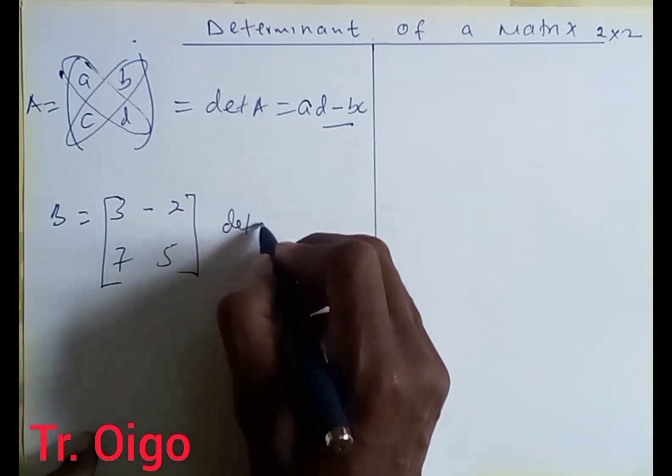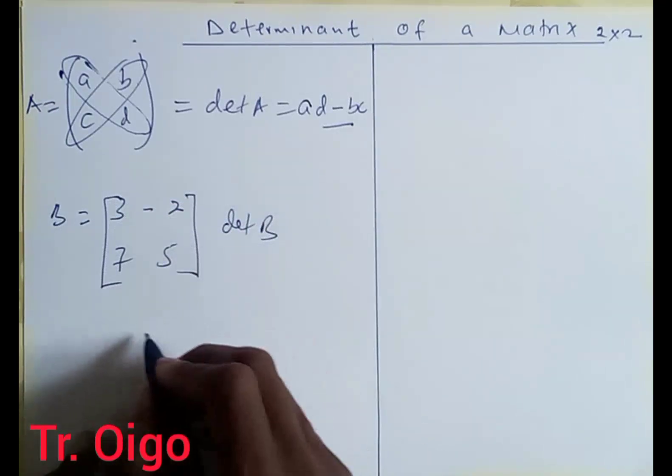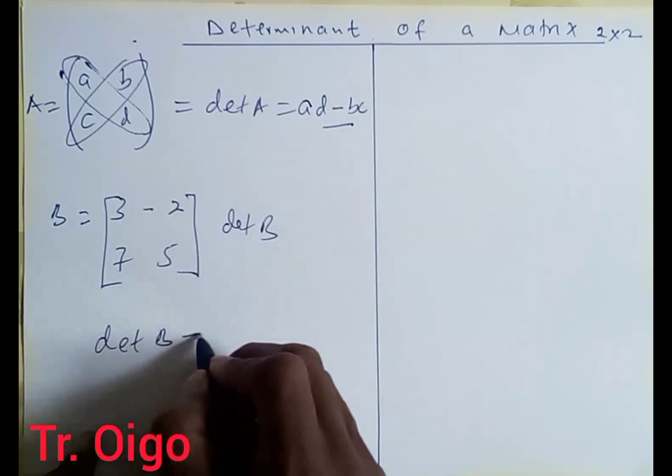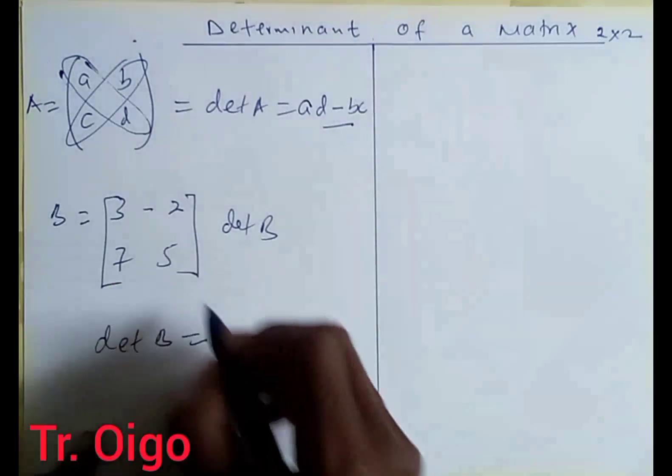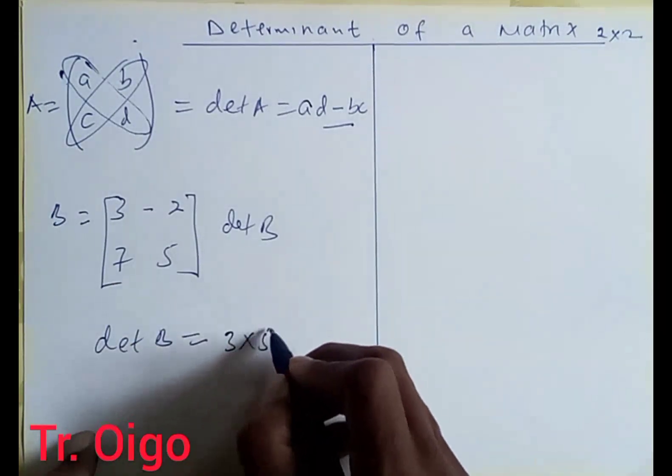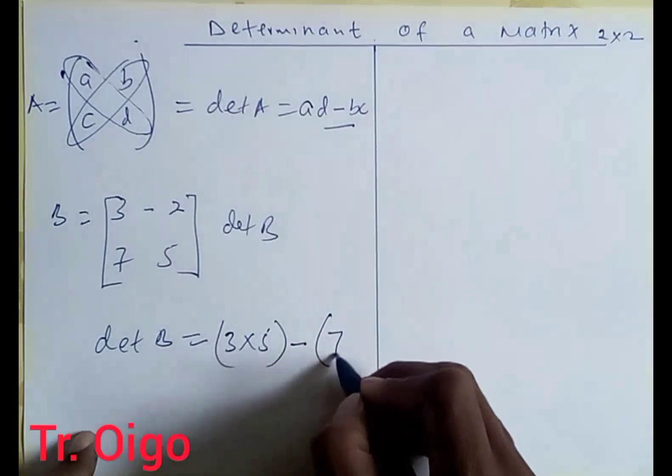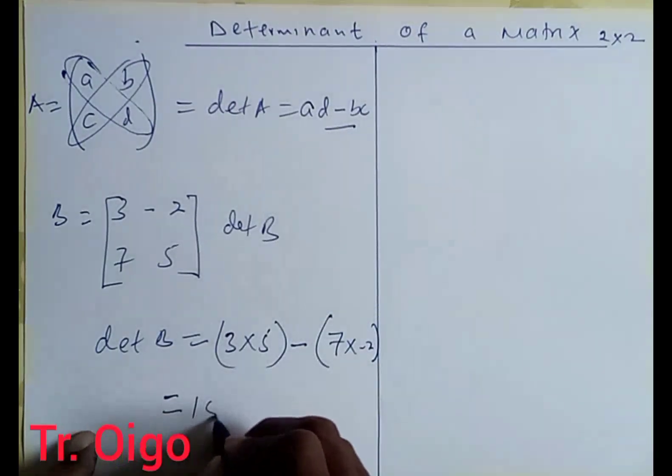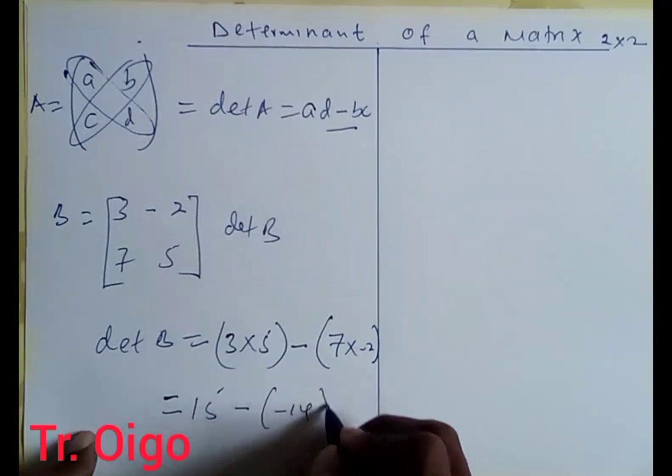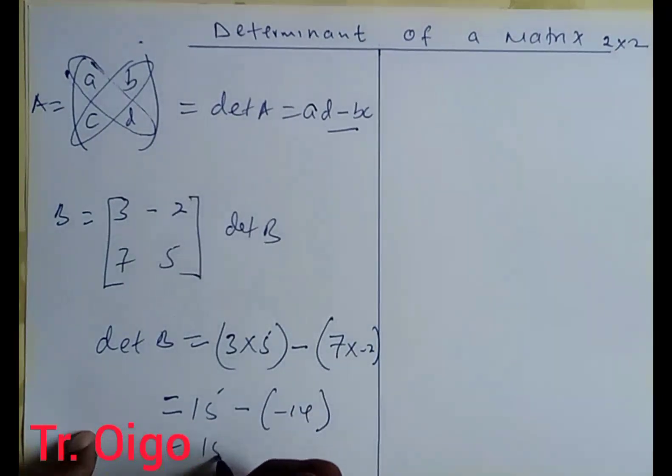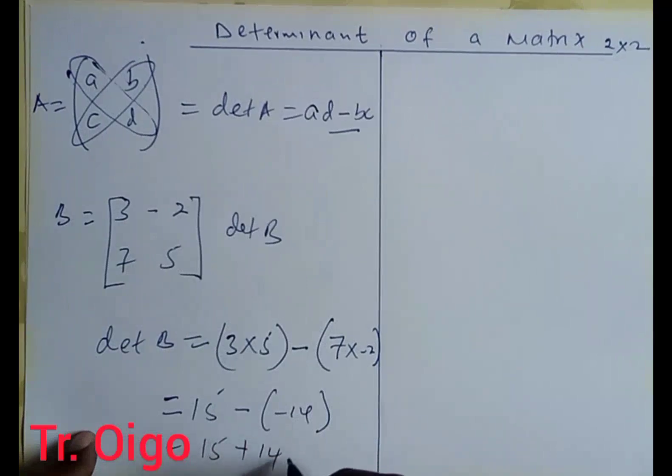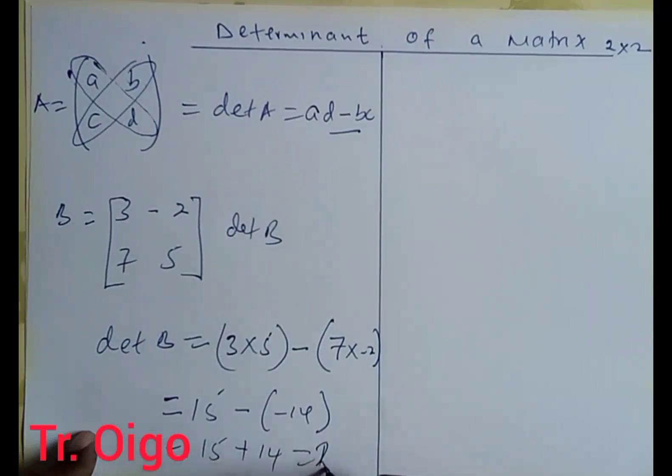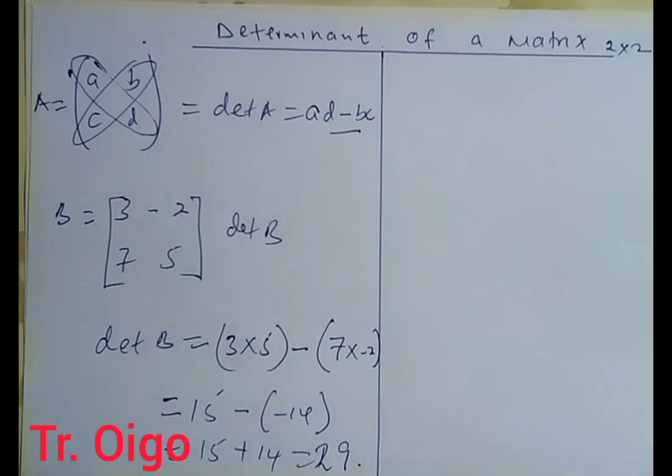To get the determinant of B, I'm going to say that det B equals 3 multiplied by 5 minus 7 multiplied by negative 2. This is going to be 15 minus negative 14, and by so doing this is 15 plus 14, which gives you 29. Therefore 29 becomes the determinant of this particular matrix.